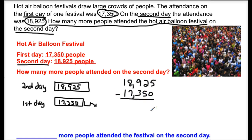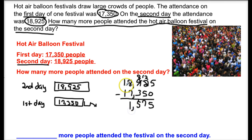We did 5 minus 0 and knew we had to regroup. We made the 2 a 12. Then 12 minus 5 is 7. 8 minus 3 is 5. 8 minus 7 is 1. 1 minus 1 is 0. And we determined that this missing value was 1,575.